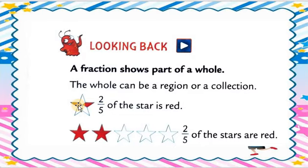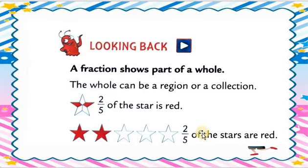Two by five of the stars are red — meaning the whole part is five and two parts are red. Wall part is five and two of the stars are shaded. Three are blank.